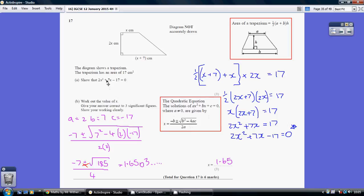a is the number in front of the x squared, so that's 2. b is the number in front of x, which is 7. And c is the coefficient on the end, the minus 17.